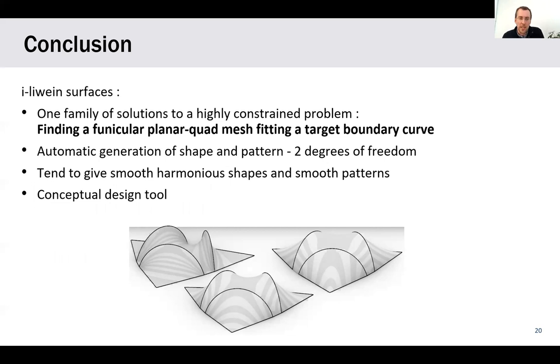To conclude on these i-Weingarten surfaces, there are one family of solutions to highly constrained problems for which the other optimizations do not work well. The problem being finding a funicular planar quad mesh fitting a target boundary, combining mechanics and structural efficiency and an interesting fabrication property of planar quadrangles. The method gives you a way to generate automatically both the shape and the patterns, giving you two degrees of freedom to do so. An interesting aspect is that you tend to have harmonious shapes, and in particular, harmonious patterns. Because if you look at the i-principal curvature lines on an arbitrary surface, usually they are not smooth, they do not give you a pattern that is usable for grid shells. Whereas, here, as you've seen on the examples, it tends to be really smooth.